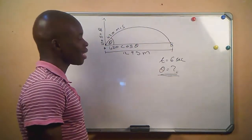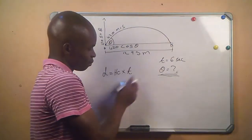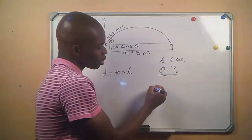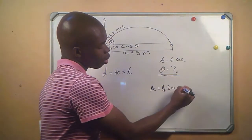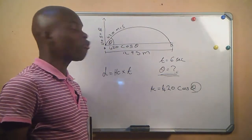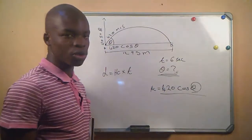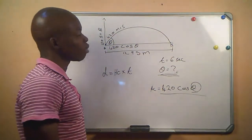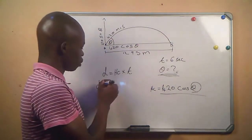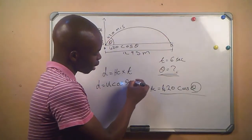The formula that helps us here is: displacement = horizontal component × t. The horizontal component is 420 cos θ. We have the displacement and the time, so θ is the only unknown. We write: d = u cos θ × t, and we make θ the subject of the formula.